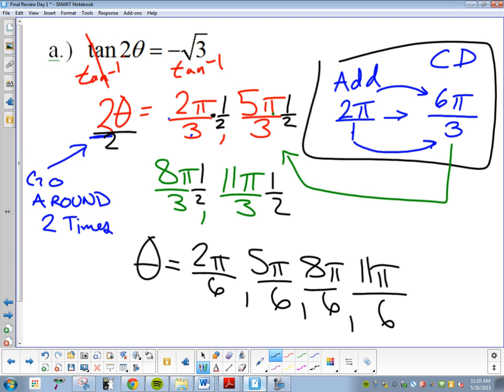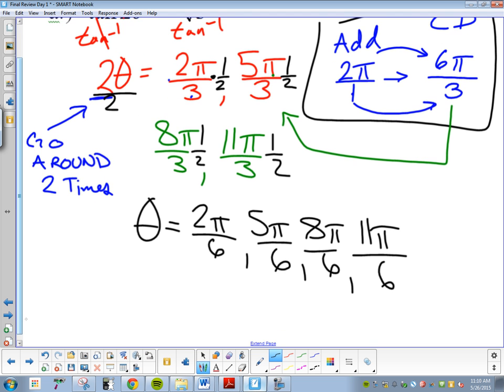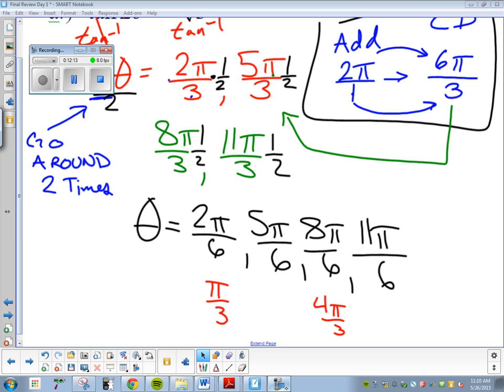Does that make sense what I've done there? Obviously, what else could I do to finish this problem? I could simplify. 2 pi over 6 is pi over 3. 8 pi over 6 is 4 pi over 3. Questions on something we covered today? Okay. We're in the next one. I wanna hold this problem.